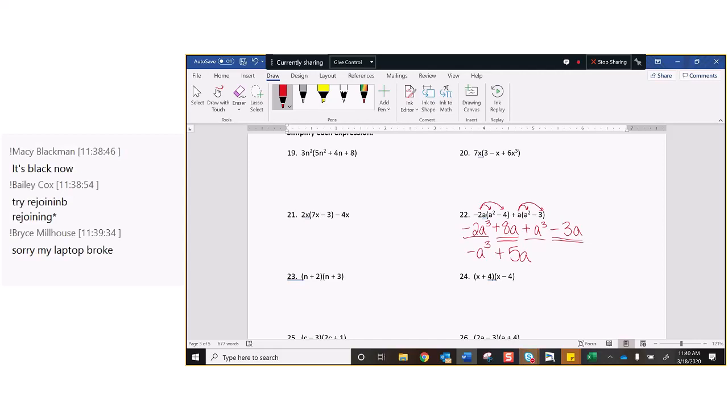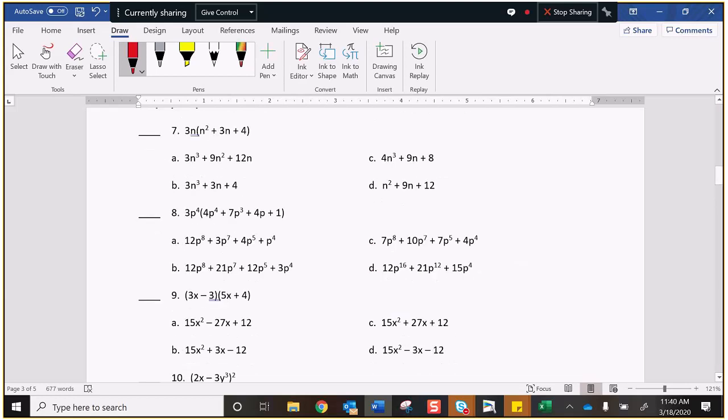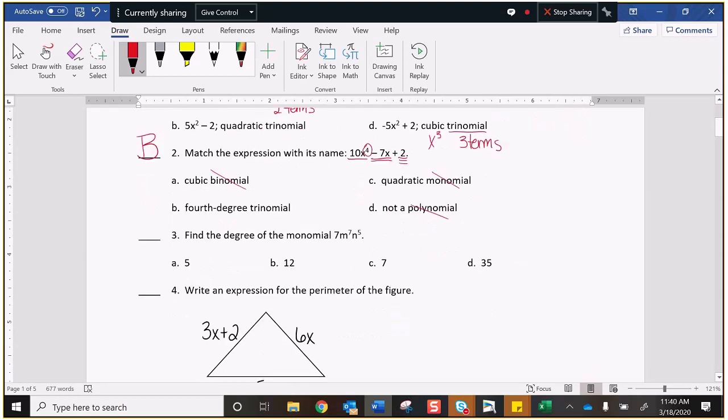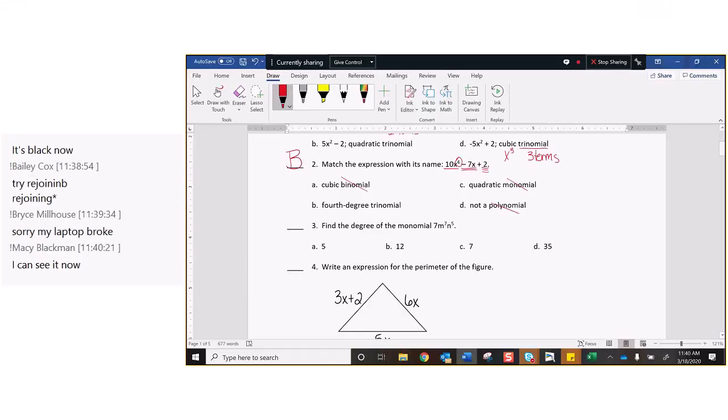And now we're going to combine our like terms. You have negative 2a cubed and a positive 1a cubed, that is negative a cubed, or you can write negative 1a cubed. You have a positive 8 and a minus 3, so that is plus 5a. Number three asks you to find the degree of the monomial. So a monomial is just one term. There's no addition, there's no subtraction.